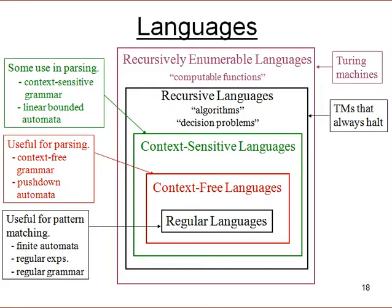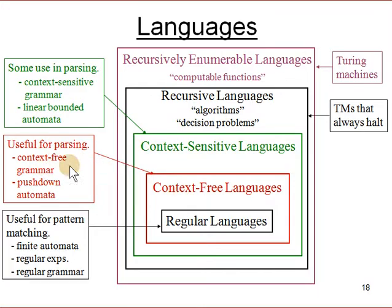Now let's look at some automata languages — not programming languages. These are studied in theoretical computer science. They define the kinds of computations you can do. The simplest are regular languages, used for pattern matching; they use finite automata, regular expressions, and regular grammars. Then there are context-free grammars, useful for parsing — they use push-down automata. For example, parsing parenthesis expressions is a context-free language; you need a stack to count how many open parentheses you've seen.